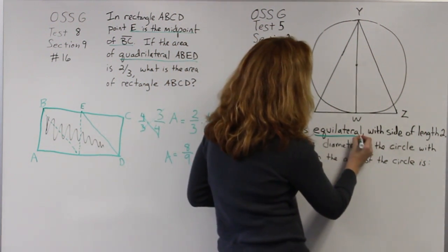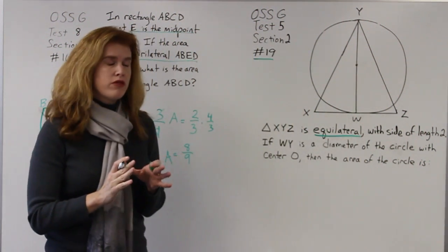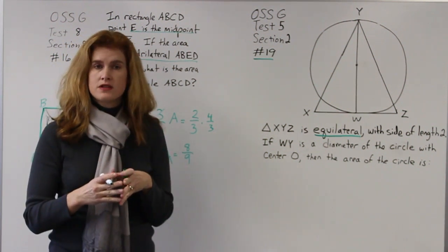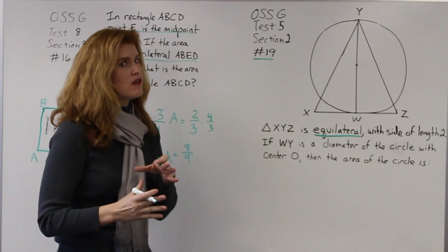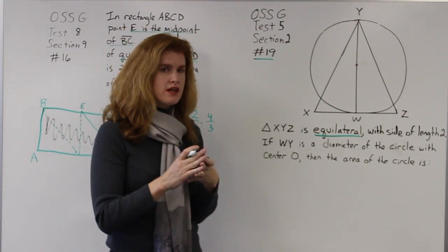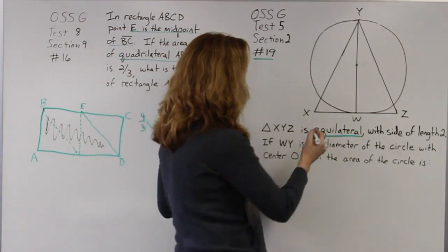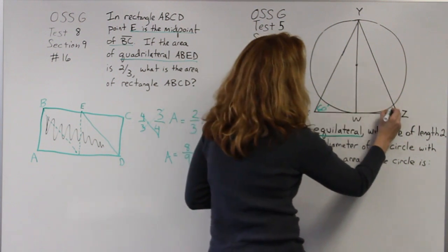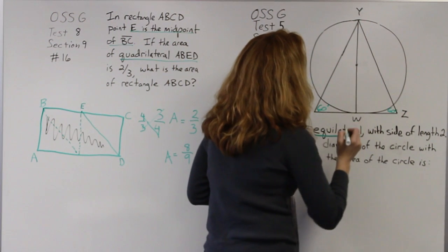Whenever I see that a triangle is equilateral, I know a couple of things. I know all the sides are equal, but I also know that all of the angles are equal. And because all the angles are equal, that means that each angle is 60 degrees. So I know that in this triangle I can label each of them 60 degrees.